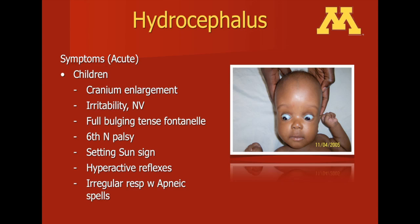This is called the sunsetting sign. When there is hydrocephalus within the brain, particularly in children, you can see this sunsetting sign. This occurs when there is pressure on the tegmentum, resulting in the eyes deviating downward.